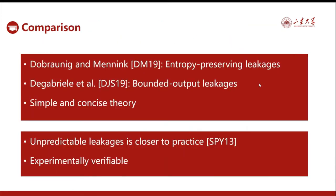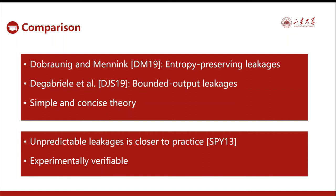Let's compare our leakage resilience result with two concurrent works. First, one reference assumed the secret state still has enough entropy after being leaked. Second, another assumed classical bounded output leakage functions. Both give rise to simple and concise theory and analysis. For ours, as mentioned, unpredictable leakage is the minimum assumption, and more importantly we believe this is closer to practice. It seems unpredictability assumptions can be verified in practice — we can just run a side-channel state recovery attack on the device and measure the success probability to verify the assumption. Anyway, one side is concise theory while the other side is practice relevance — the approaches are complementary.